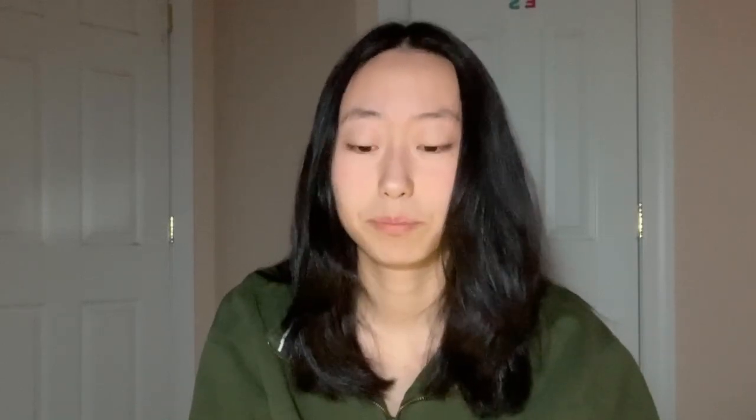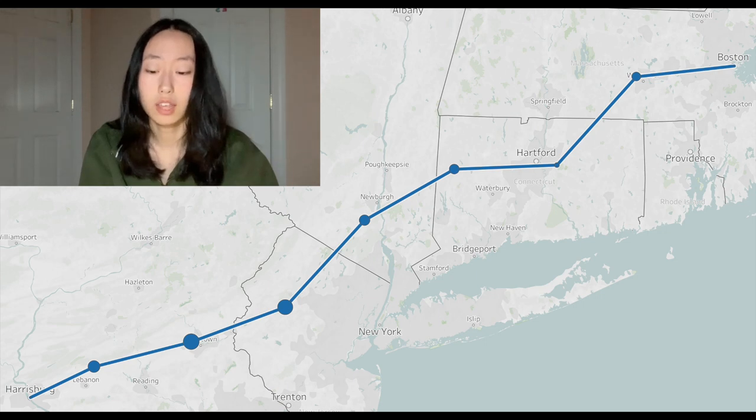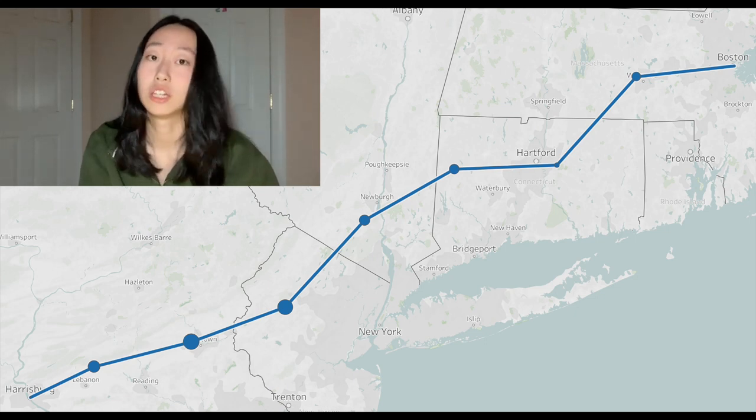We created a need function representing the number of semis that will need to recharge at every mile along a trucking corridor. Our model found that charging stations should be located every 50 miles and should have an average of 600 chargers at each station, although this number can go up to 1,300.